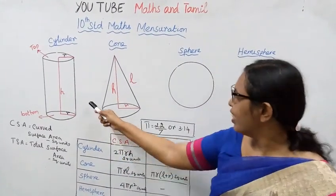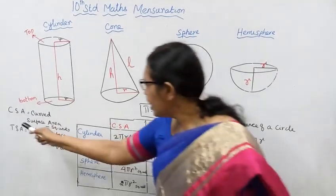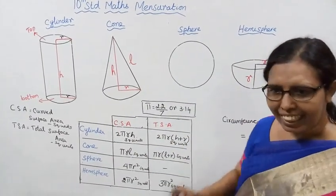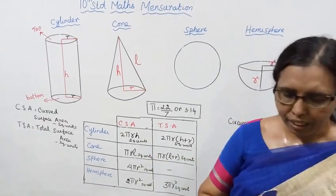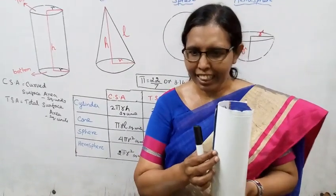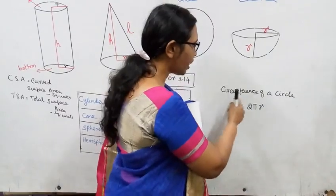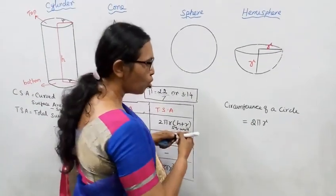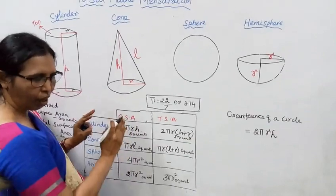Hello students. For a cylinder, sphere, and hemisphere, we look at CSA — curved surface area — not just total surface area. For a cylinder, if you take a rectangular sheet and roll it, you get the curved surface. The circumference of the circular base is 2πr, and the height gives the rectangle's other side.